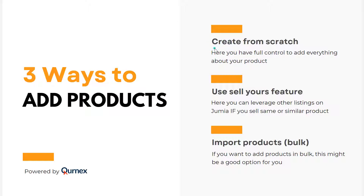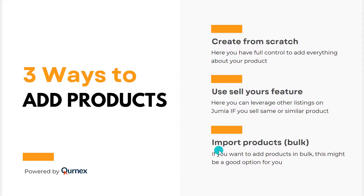It takes time, but it's one of my preferred methods. The second method is to use the 'Sell Yours' feature on Jumia — you can see products you want to sell that other people might already be selling, click the button and every detail will be transferred to your account, and you can simply exchange some of the features. It's very fast. The third method is to import products in bulk.